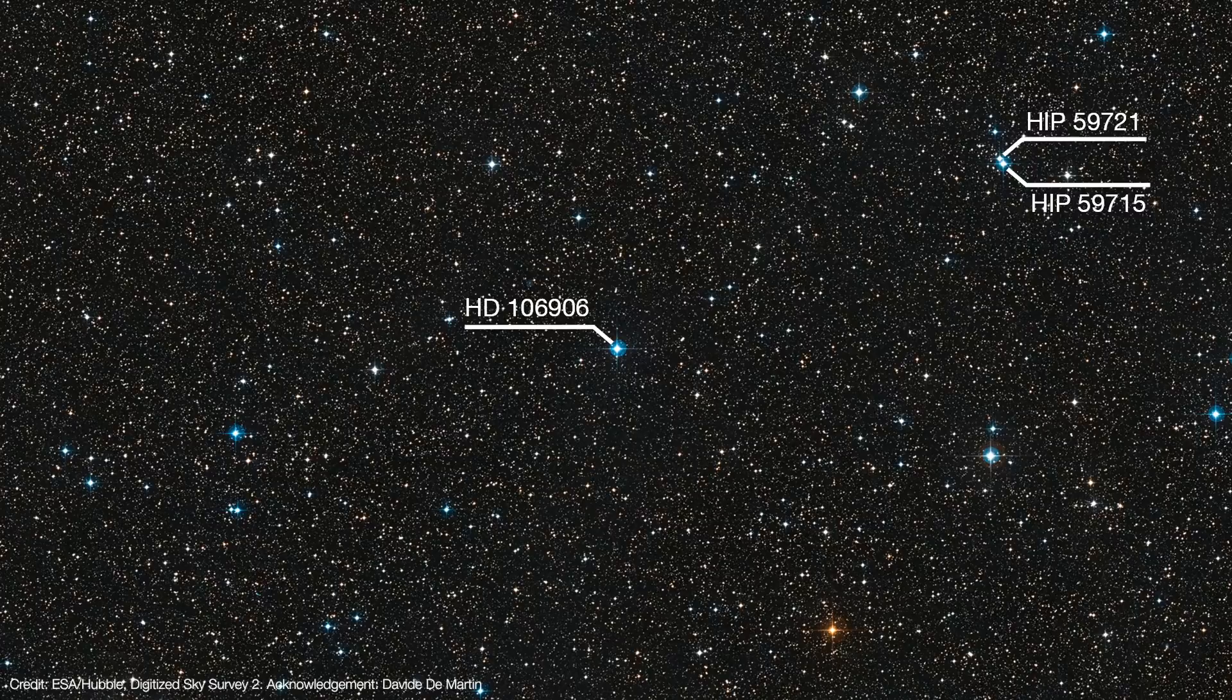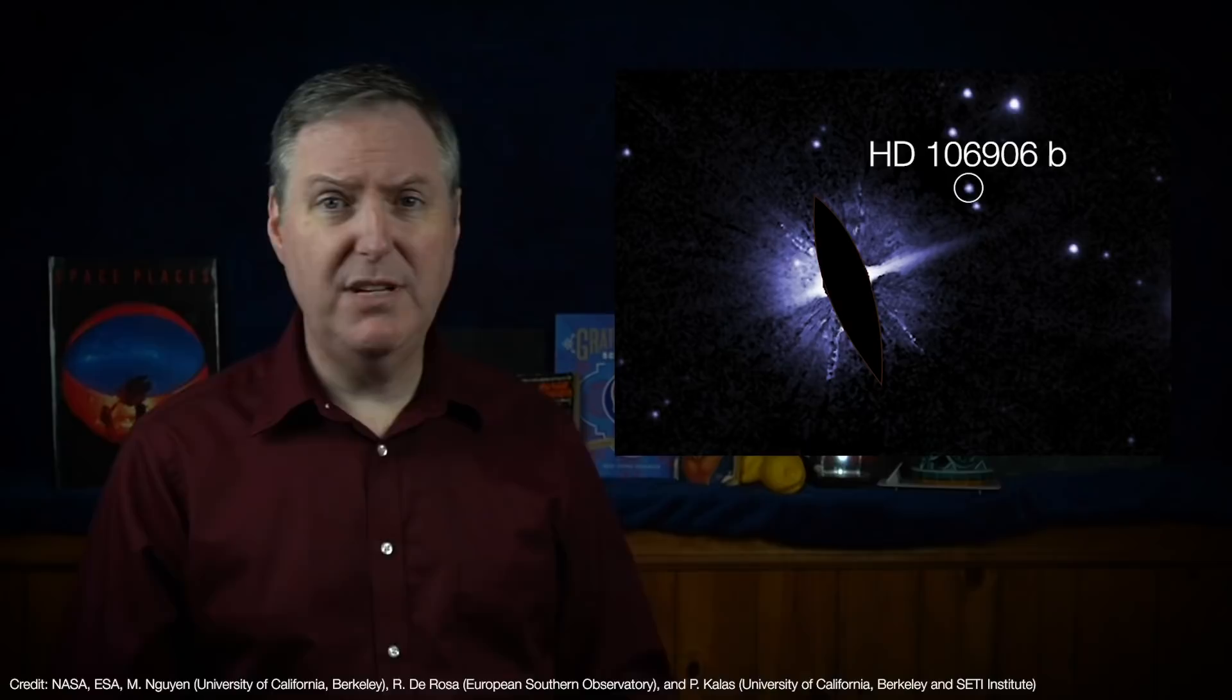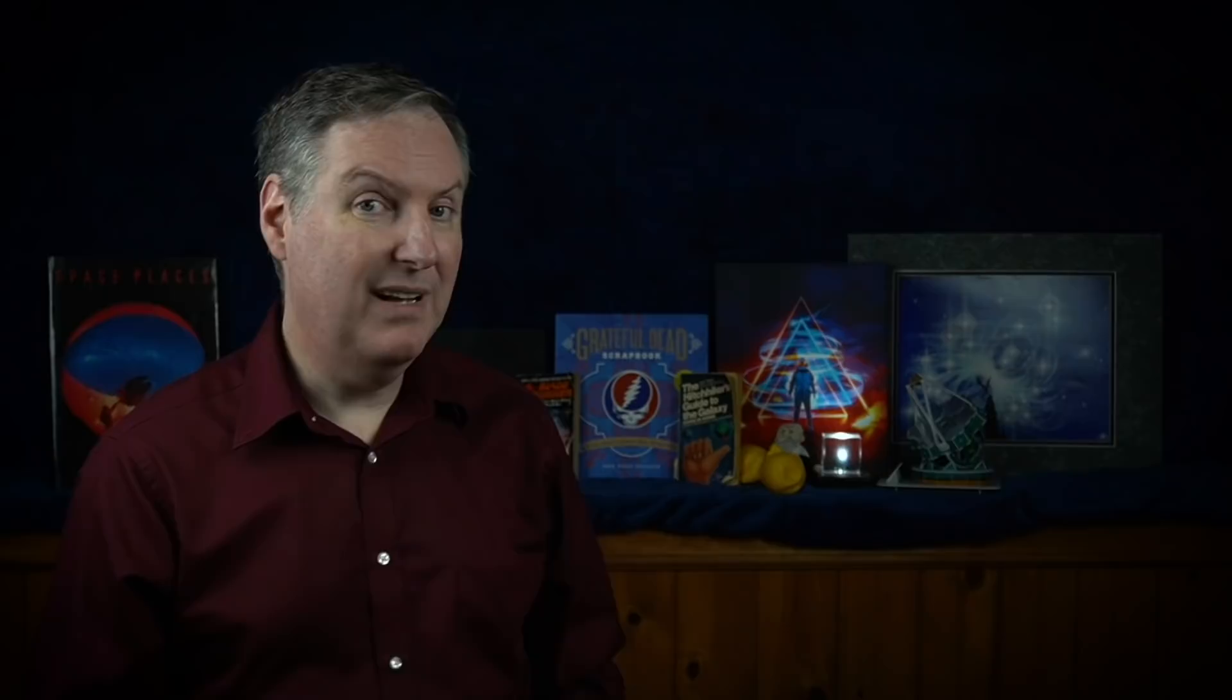Alternatively, it's possible the planet didn't form with HD 106906 at all, but was captured by the binary after being kicked out of another system. The way to tell would be to take the planet's spectrum and measure its radial velocity. And that would tell us whether or not it was moving away from us and rotating in the same direction as the disk, or if it was moving toward us and rotating opposite the disk's rotation. That would put it in a retrograde orbit, and that would certainly imply it was captured from another system.